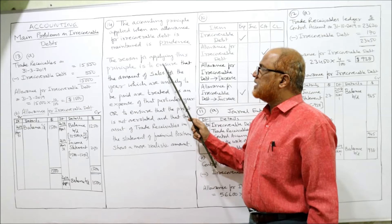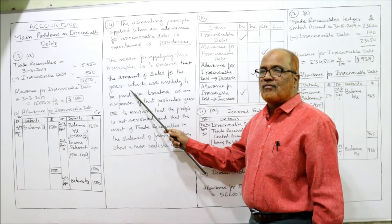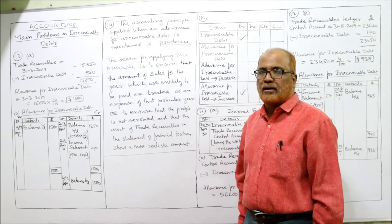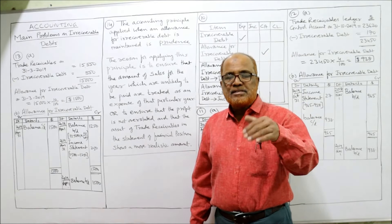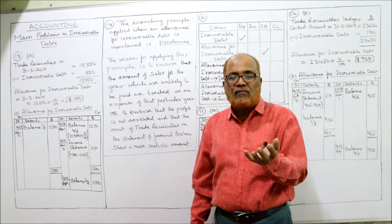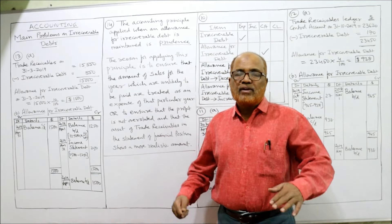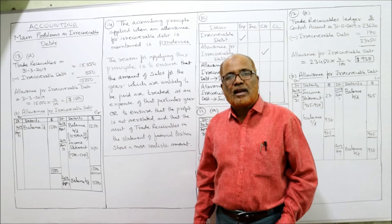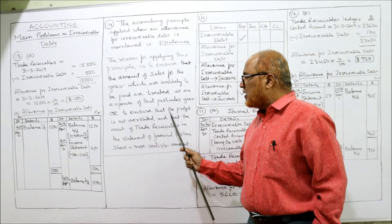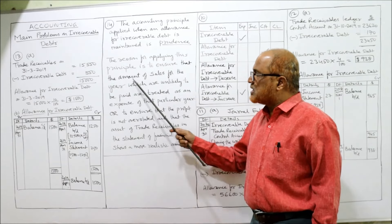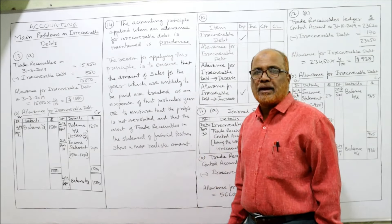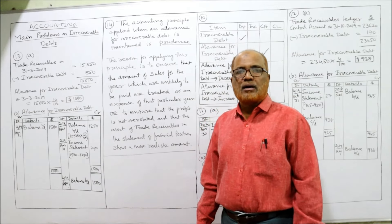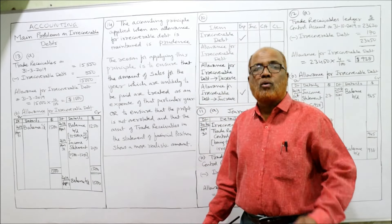The reason for applying this principle is to ensure that amounts of sales for the year which are unlikely to be paid are treated as an expense of that particular year. When sales are made but the business believes it cannot recover the amount, it writes that off to the income statement. Additionally, it is applied to ensure that profit is not overstated — those are the two reasons why this accounting principle is applied.